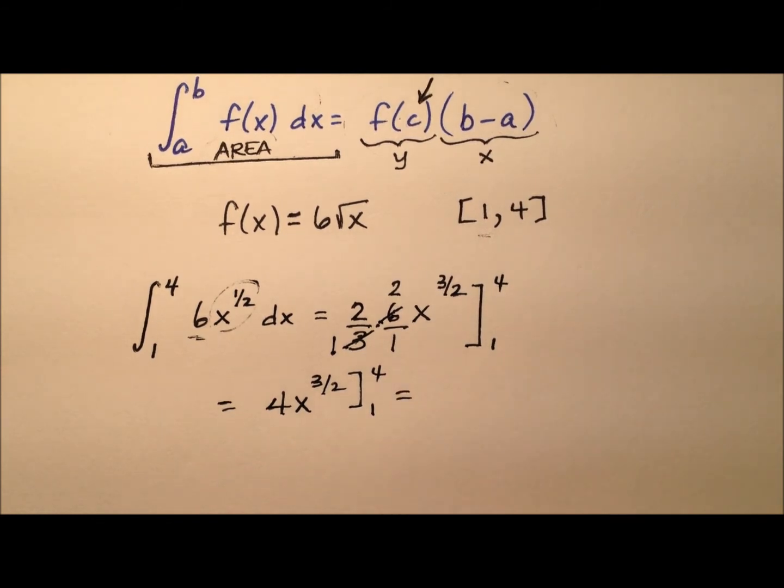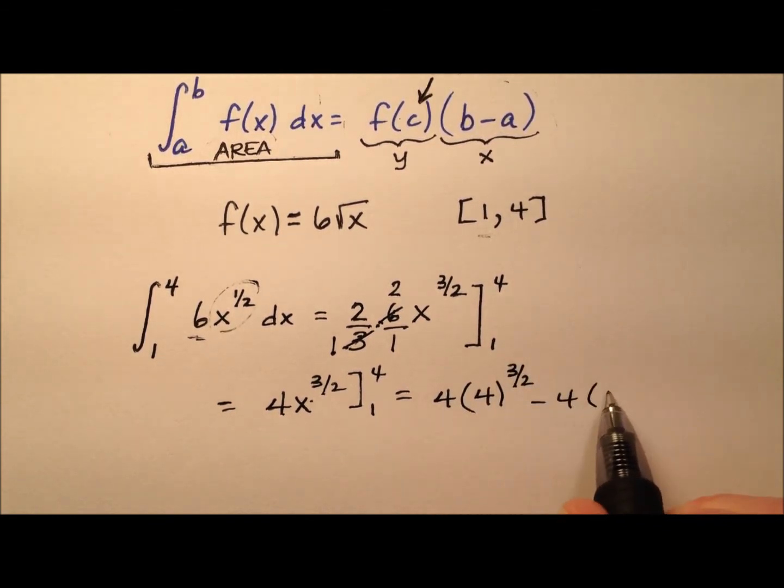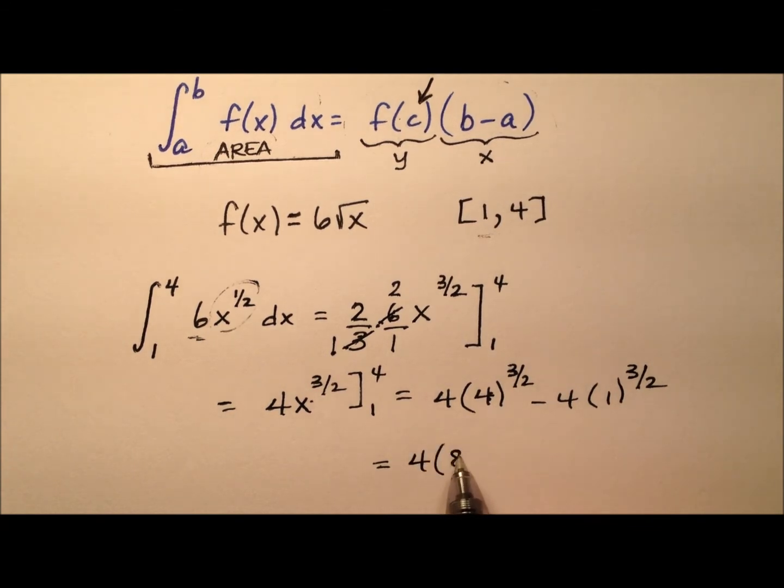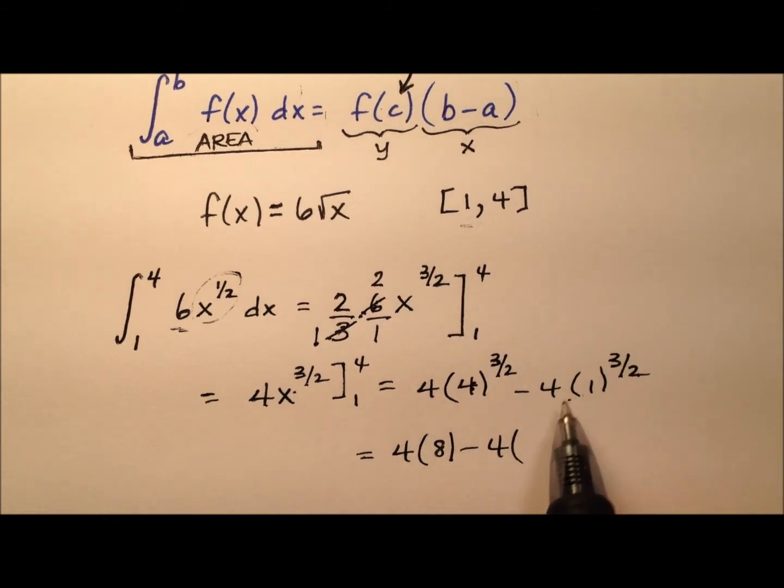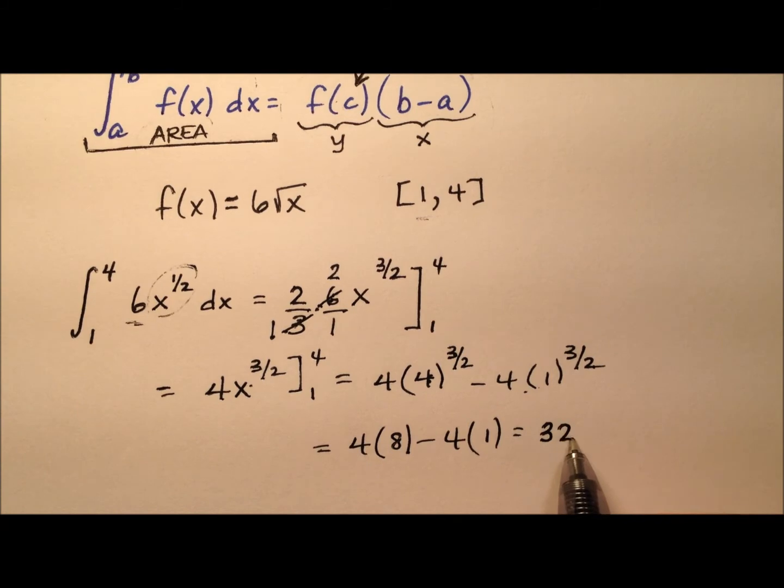Let's go ahead and evaluate this. We'll plug the 4 in and we'll plug the 1 in and we'll subtract those values. The square root of 4 is 2, and then 2 cubed is 8. And the square root of 1 is 1, and then 1 cubed is 1. So it looks like we have 32 minus 4, which equals 28.